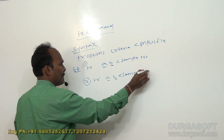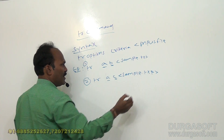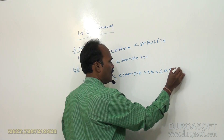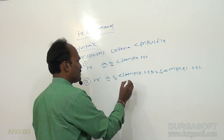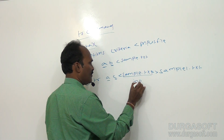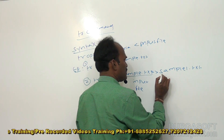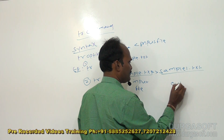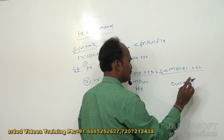The processed, converted data will be stored into another file called sample1.txt. This becomes the input file (sample1.txt reads from sample.txt), and sample.txt becomes the output file — illustrating how input and output redirection work together with the tr command.